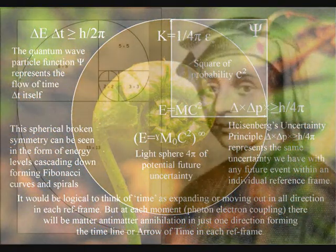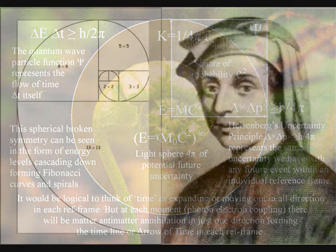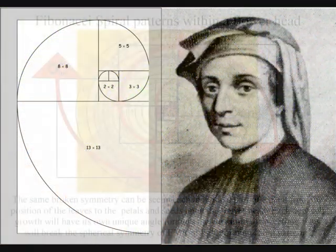This can best be seen in plant life, in the form of the Fibonacci spiral, being visible in almost every type of plant life.